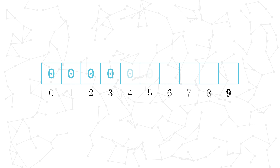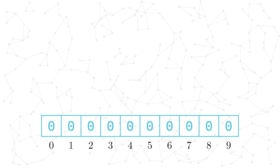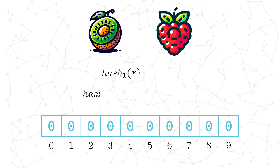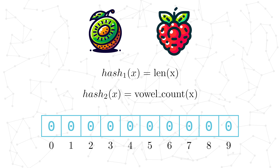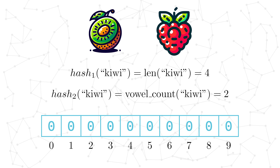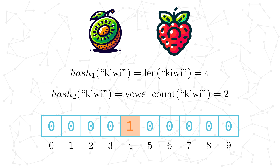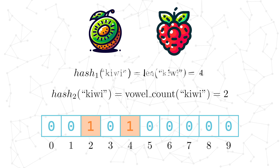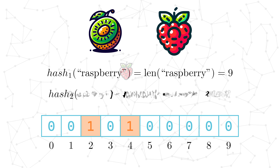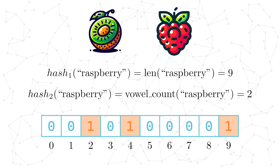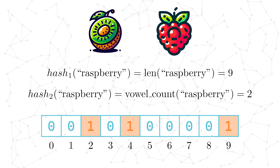We'll start off with a bit array of size 10 with all of the bits set to 0 initially, with index positions shown below the array. We have two hash functions: the first one simply returns the number of letters in the fruit's name, and the second one returns the number of vowels in the name. Just a disclaimer — these are horrible hash functions to use literally anywhere outside of this example. So let's start off by inserting the fruits kiwi and raspberry. Kiwi has four letters and two vowels, so we set the bits at index positions 2 and 4 to a 1. Raspberry has nine letters and also two vowels, so we set the bit at index position 9 to a 1 and keep the bit at index position 2 the same.